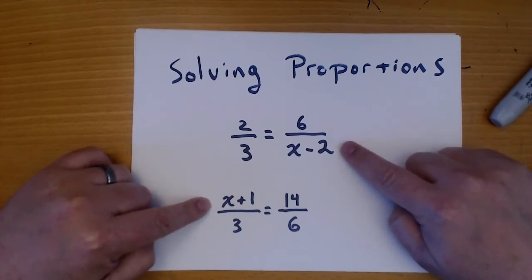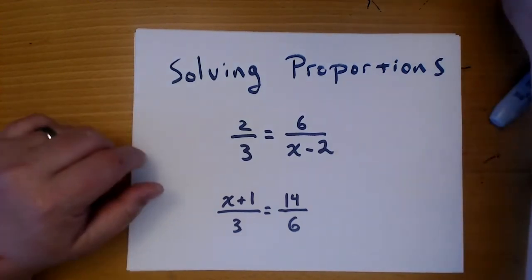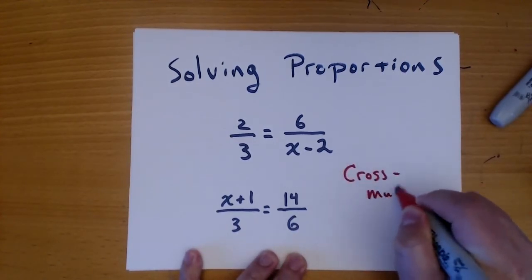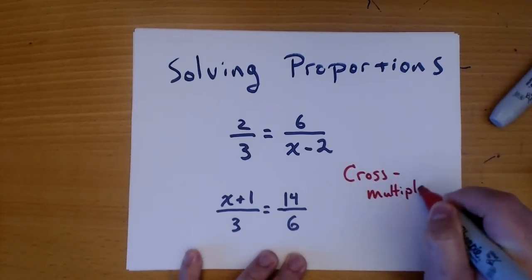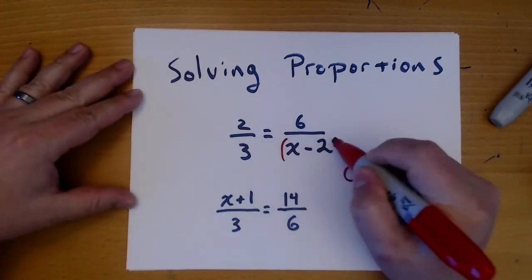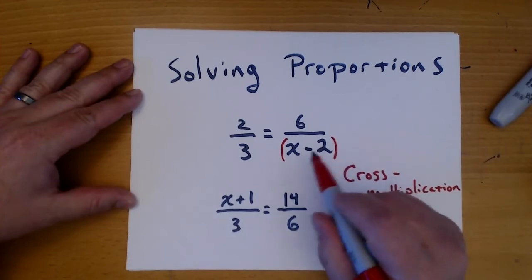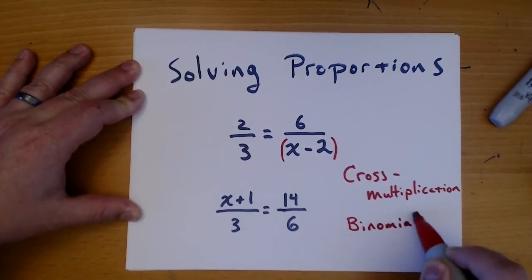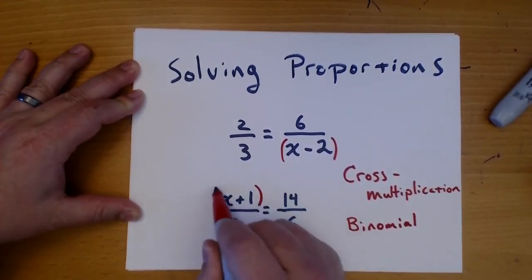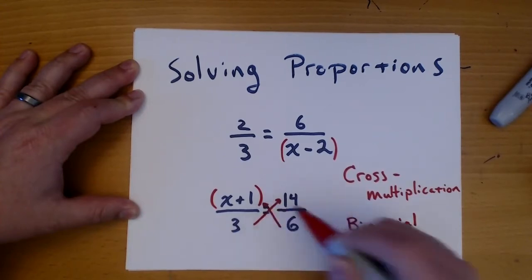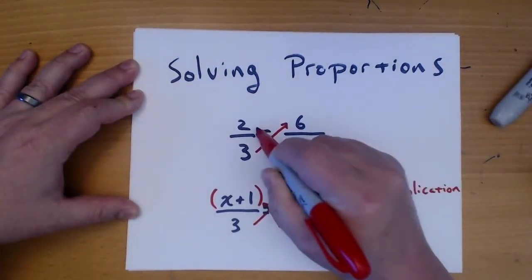So we use one technique for this called cross multiplication. The way to use cross multiplication is to first wrap any binomial—that's what those are when there's two terms in there—binomial. We wrap the binomials in parentheses and then we multiply upward in a cross-like pattern.